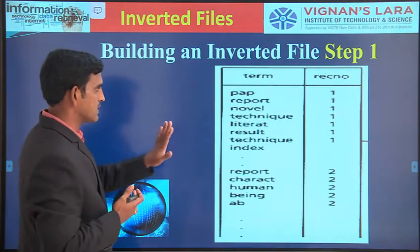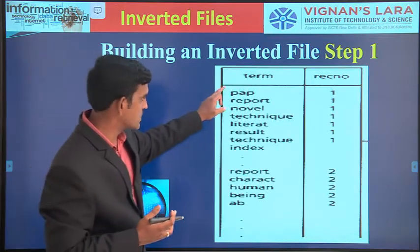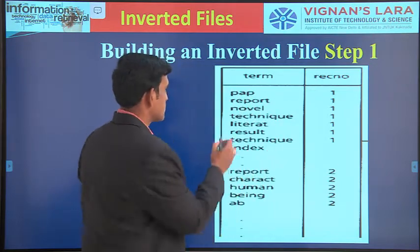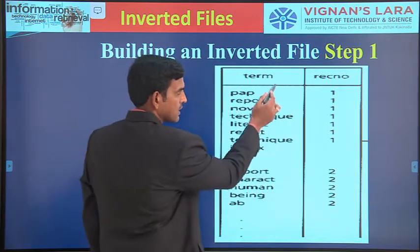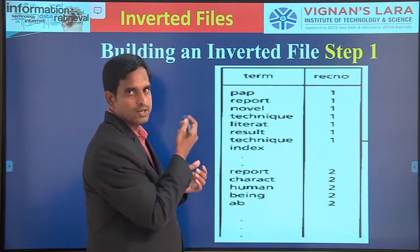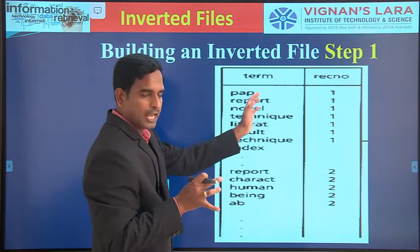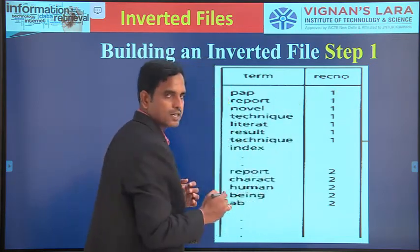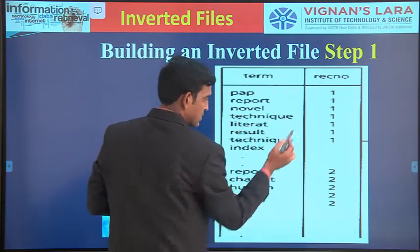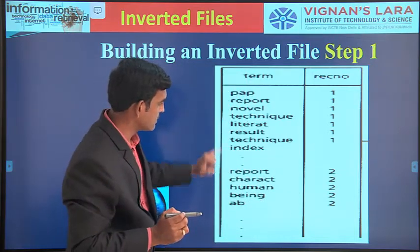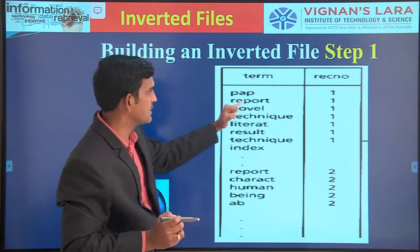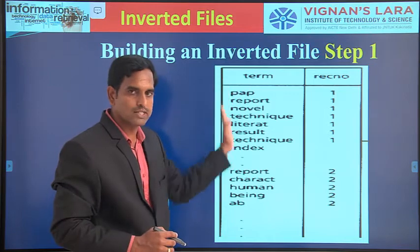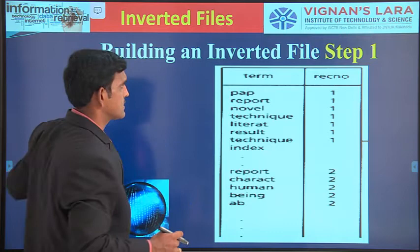This is an example for step one — parsing. We will have a set of words and their document numbers. For example, 'PAP' is present in document number one, 'report' is present in document number one and also document number two. You can have repetitive words across documents. Each and every word is taken along with its document number — this is how step one, parsing, is done.